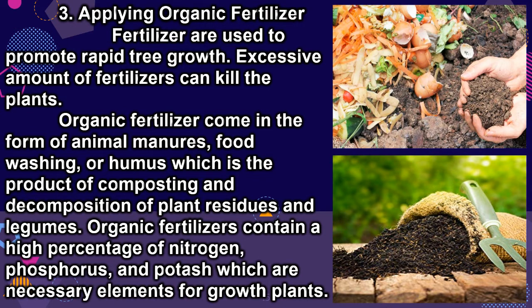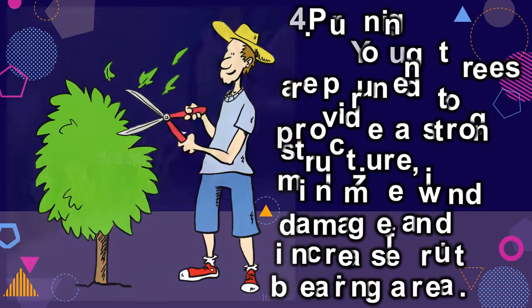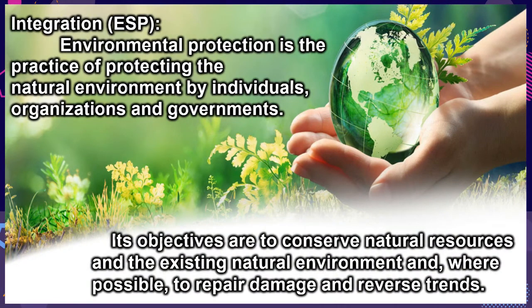Four: Pruning — young trees are pruned to provide a strong structure, minimize wind damage, and increase fruit-bearing area. Integration — ESP: Environmental protection is the practice of protecting the natural environment by individuals, organizations, and governments. Its objectives are to conserve natural resources and the existing natural environment, and where possible, to repair damage and reverse trends.